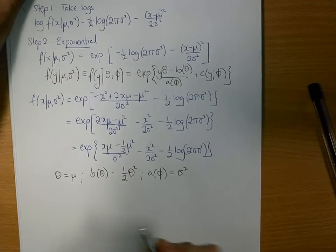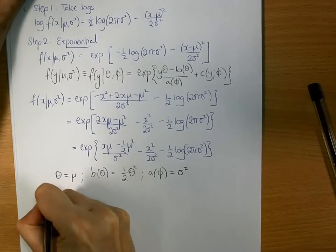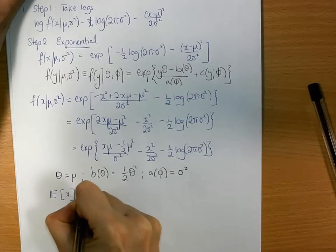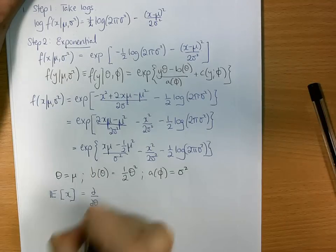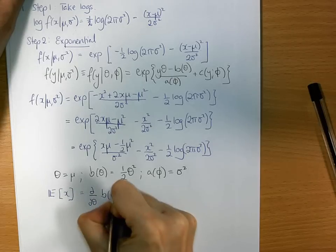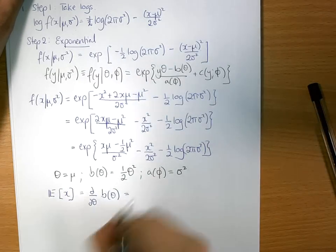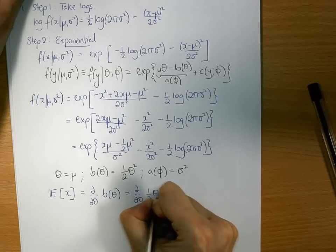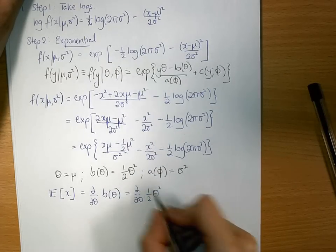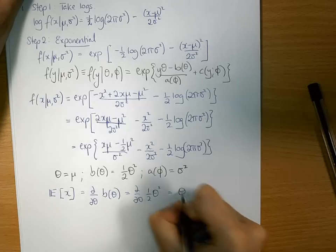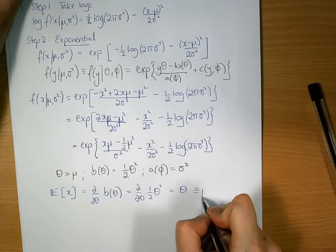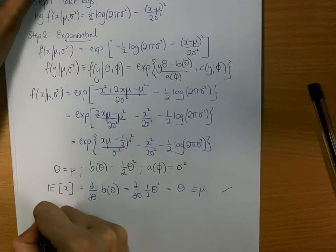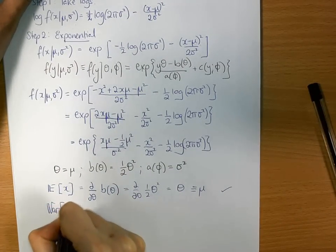All of these terms are functions of my data x and my phi, which is sigma squared. Now I can find my expected value of x, which is the first differential with respect to theta of b of theta. It's d d theta of a half theta squared, which equals theta, which is equivalent to mu, which is correct as per your own knowledge.